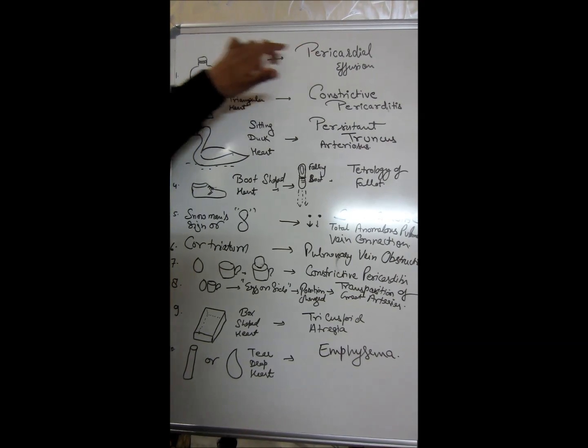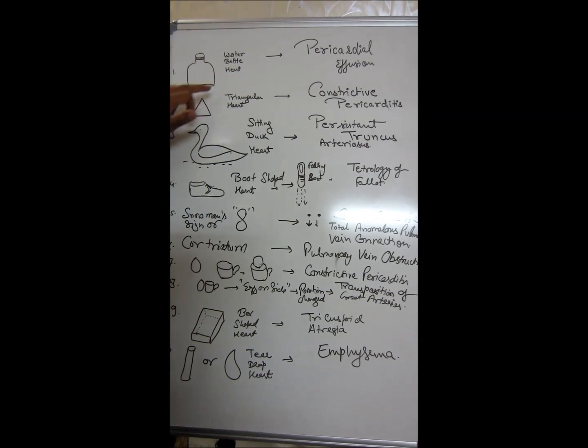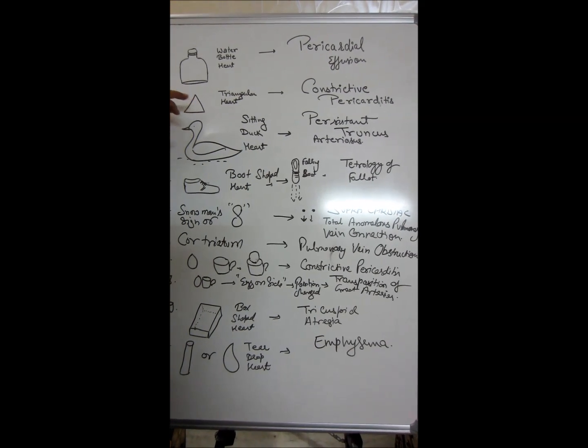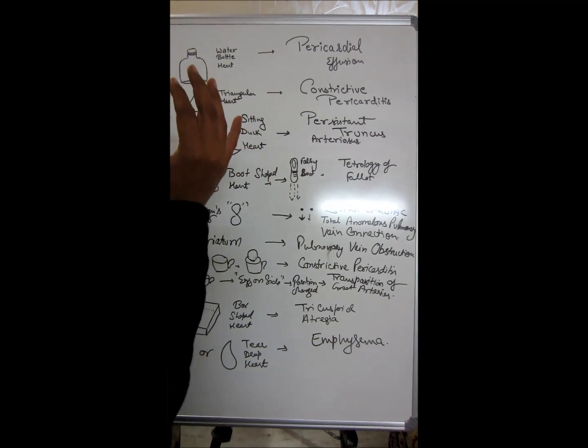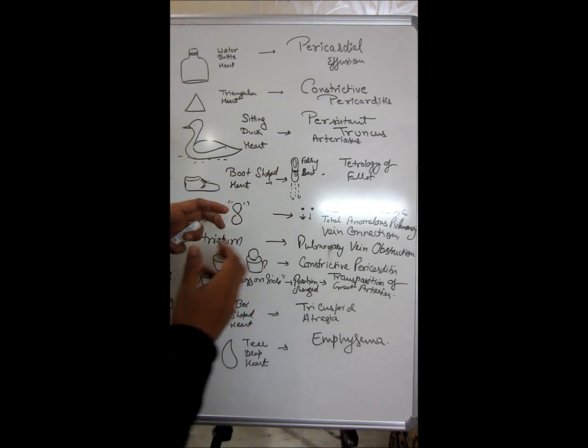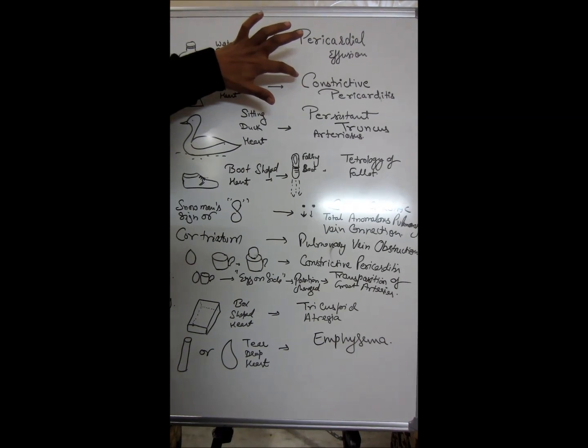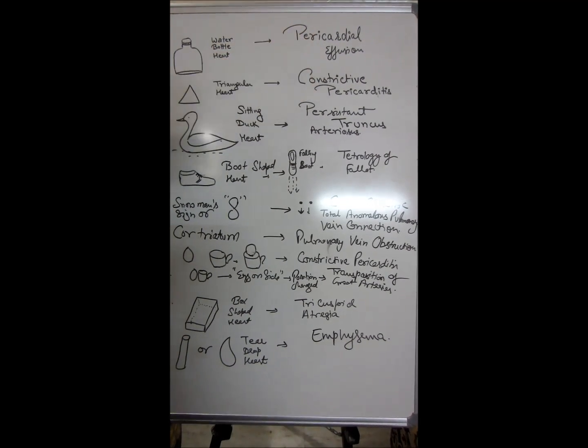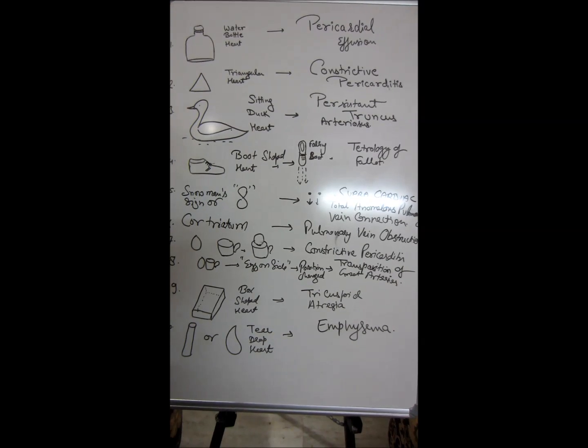The triangular heart - triangular heart means a heart in the triangle that is getting constricted. So you can remember it by that condition, the constrictive pericarditis.